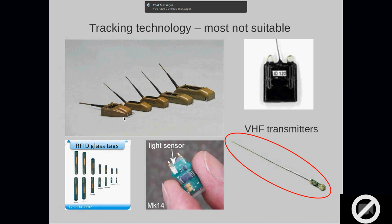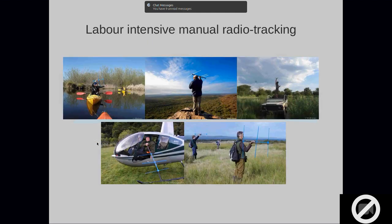For a bird that moves to different places in different years and you don't know quite where it's going to be, none of those technologies work. The only thing we can use is the VHF transmitters - very high frequency radio tags - which are circled here in red. These can be quite small and for their entire life they send out a little pinging sound. So what we really needed to do was to be able to track these little tags.